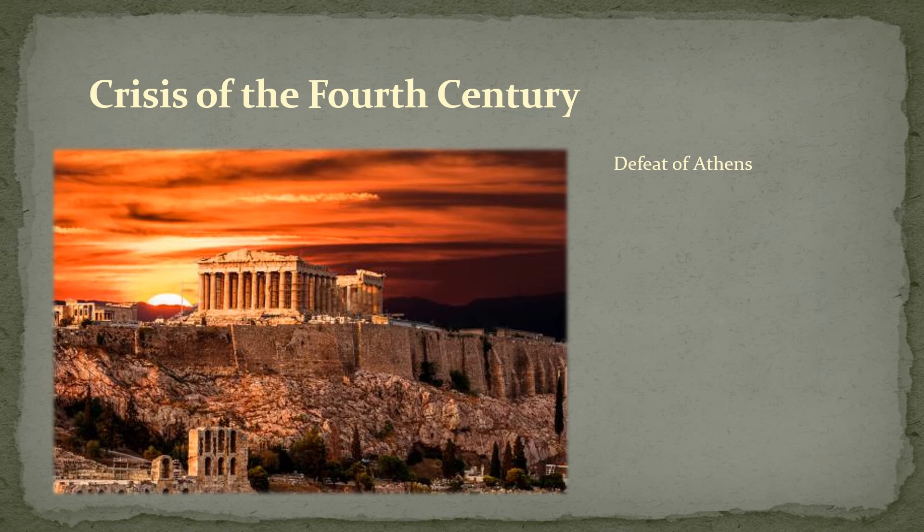Athens could have done worse in the peace. Some members of the Peloponnesian league wanted to kill all the Athenians and sell the women and children into slavery, but Sparta wouldn't allow that. They contented themselves with breaking up the Delian League, tearing down the long walls, and installing a pro-Spartan oligarchy in Athens. All the former members of the Delian League similarly became oligarchies.